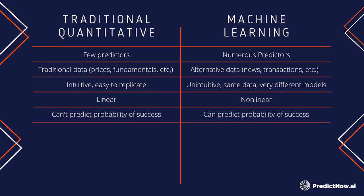Machine learning can provide that — because it takes into account variables outside of your original trading strategy. It might take into account hundreds of other variables, things such as an epidemiological model predicting new cases, or how many tweets President Trump made that day. All kinds of variables not in your original trading strategy can together assess a probability of whether today's trade will be successful. Every day you will assign a different probability — it's not like a static winning ratio you get from your traditional quant model.